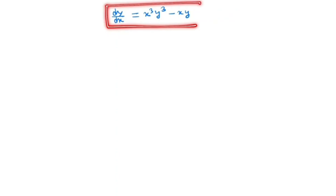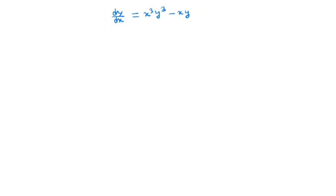dy/dx is equal to x³y³ minus xy. So first try to simplify this equation. So dy/dx plus xy will be x³y³.